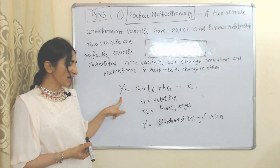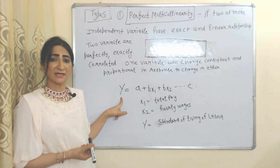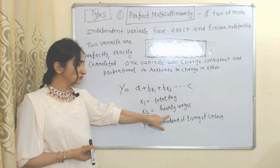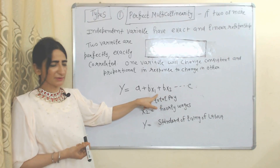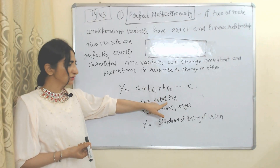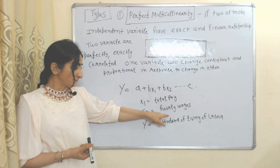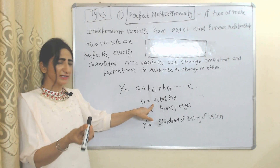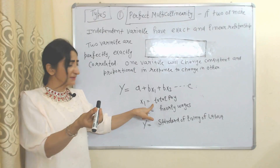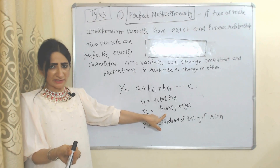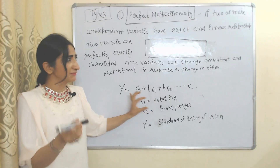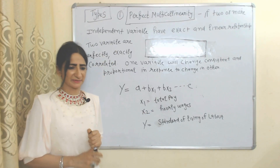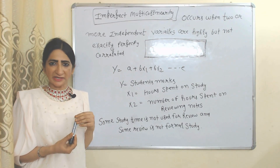Here Y is the dependent variable — standard of living of labor. X1 and X2 are independent variables: X1 is total pay and X2 is hourly wages. Labor's standard of living depends on total pay and hourly wages. These two independent variables have a linear relationship, as total pay increases consistently and proportionally in response to an increase in hourly wages. This is called perfect multicollinearity.